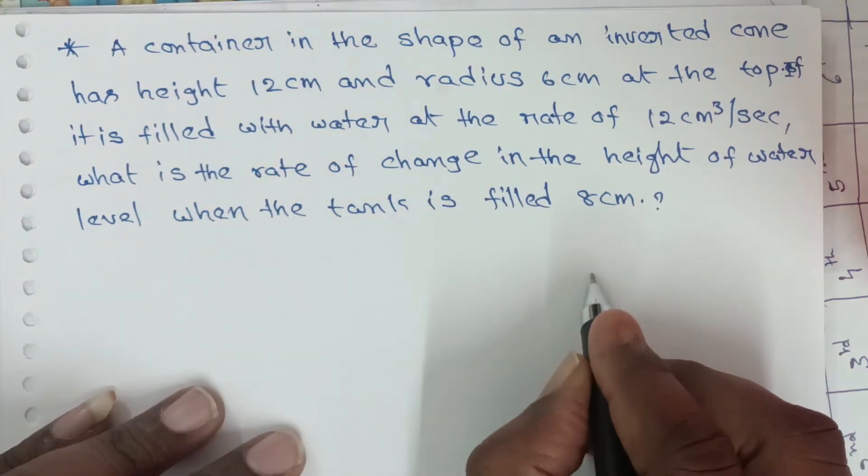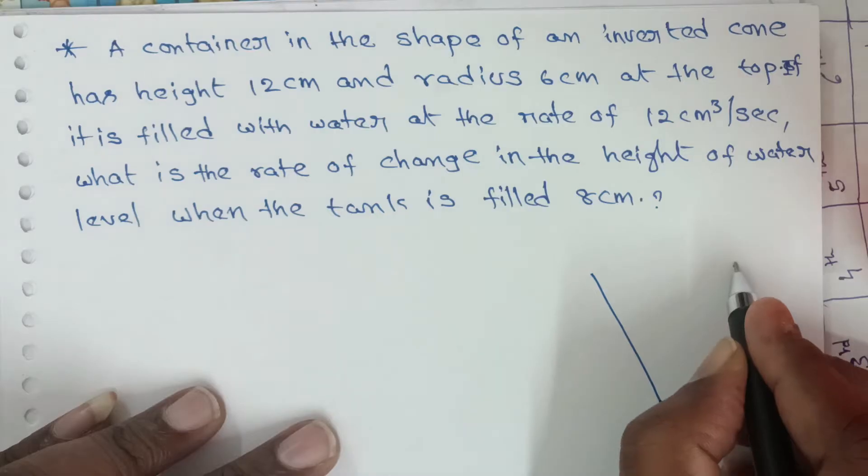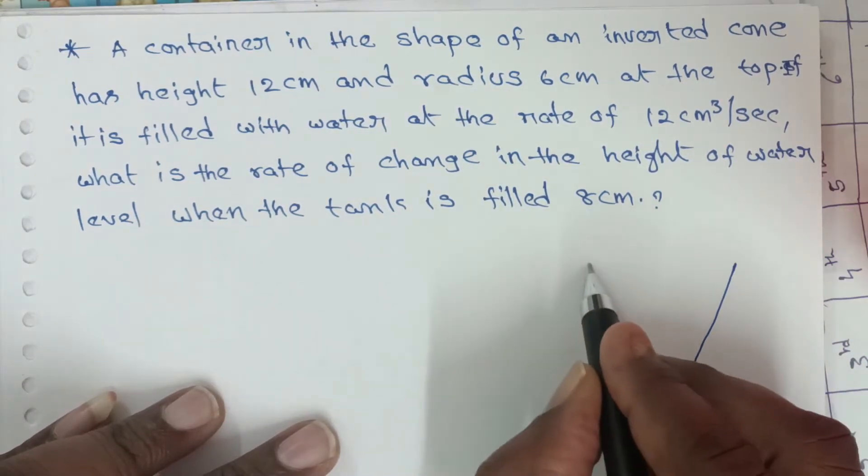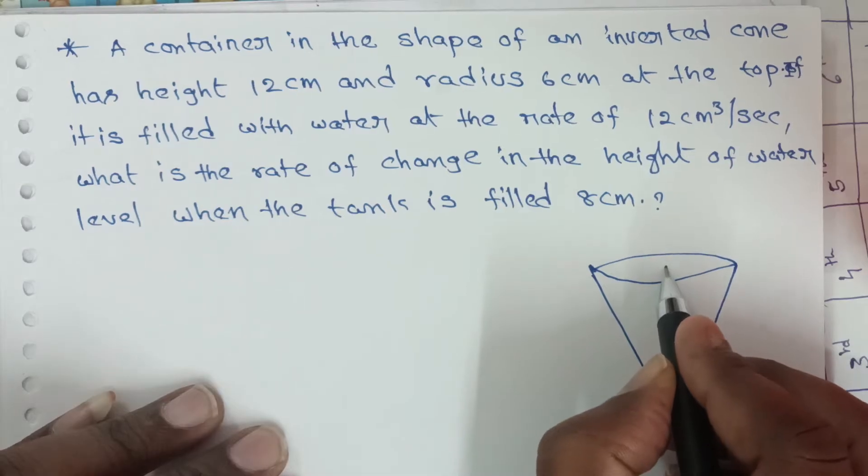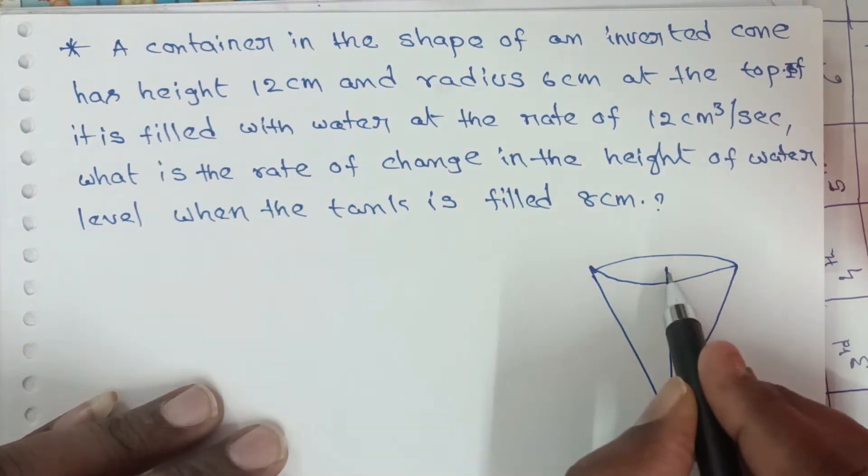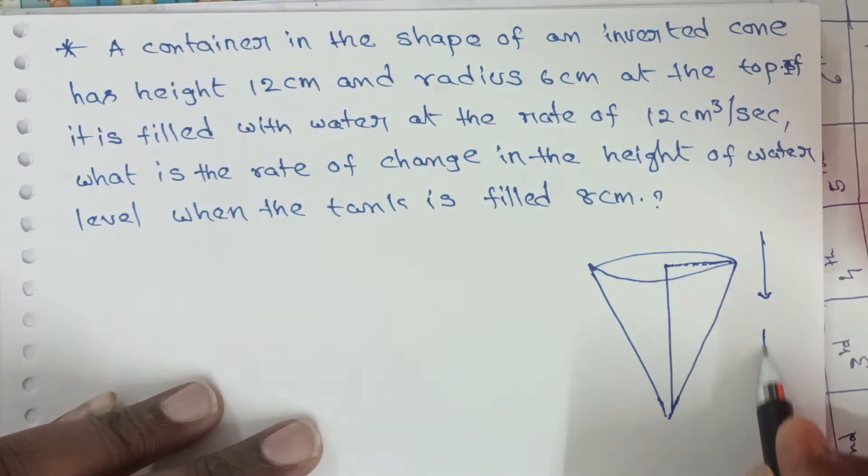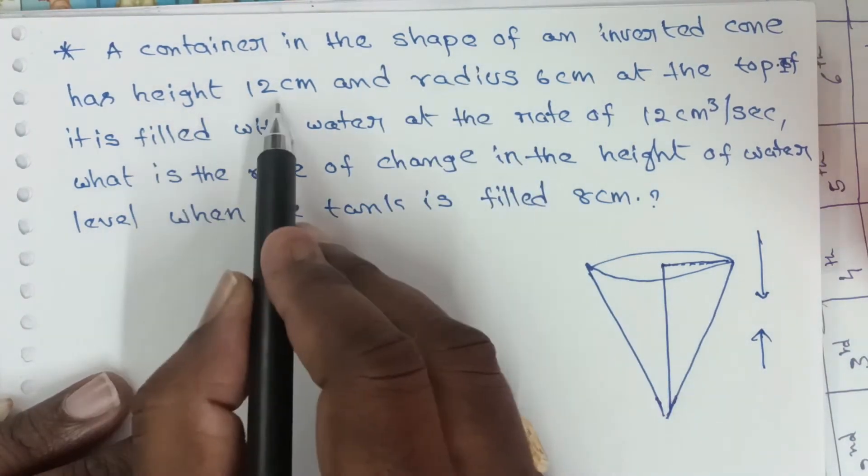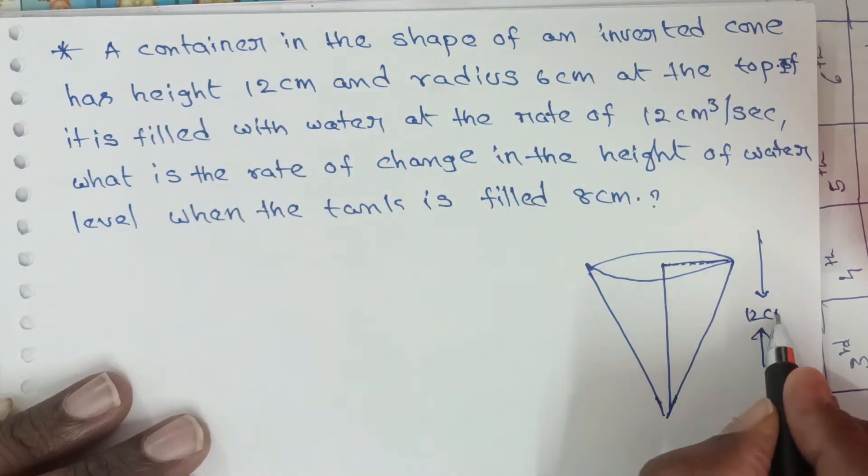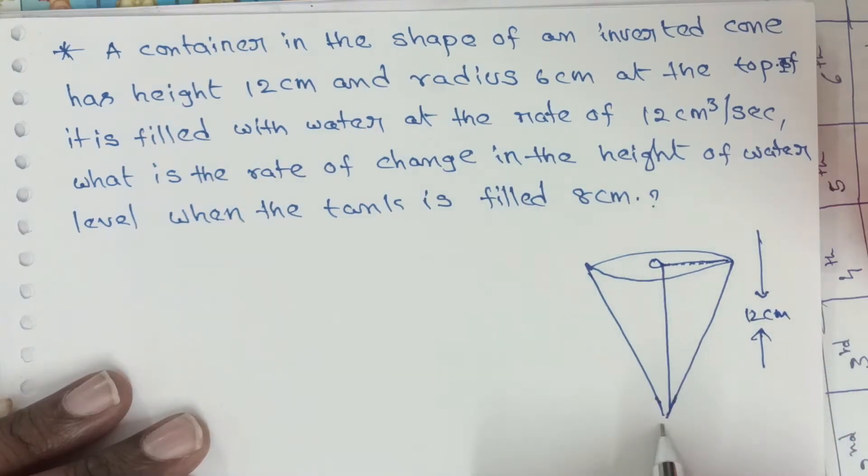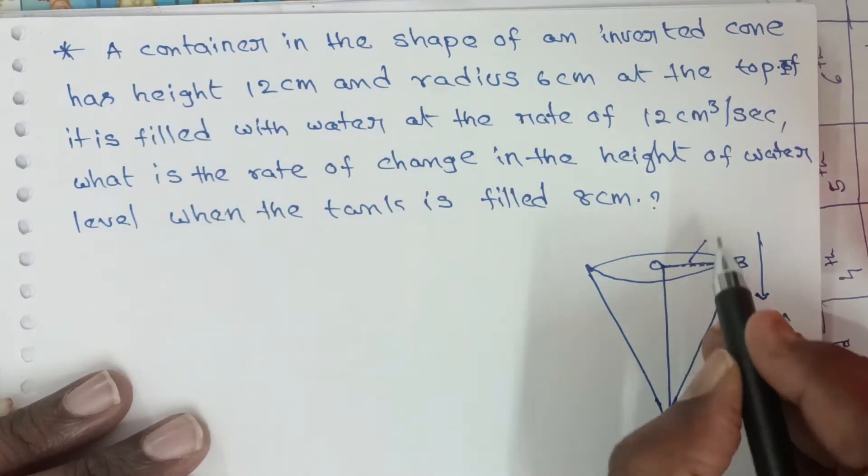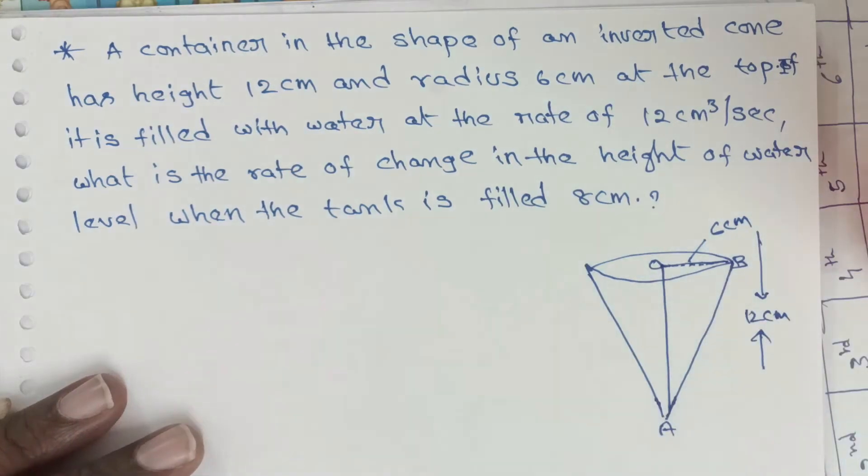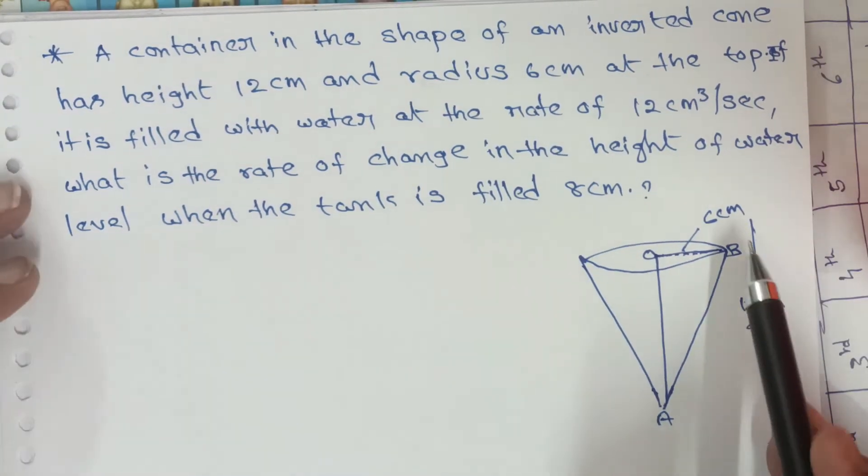So this is the inverted cone. This is the height of the cone. The radius is here. The total height of the cone is 12 cm. So let us assume O, A, B. Height 12 cm and radius 6 cm at the top.